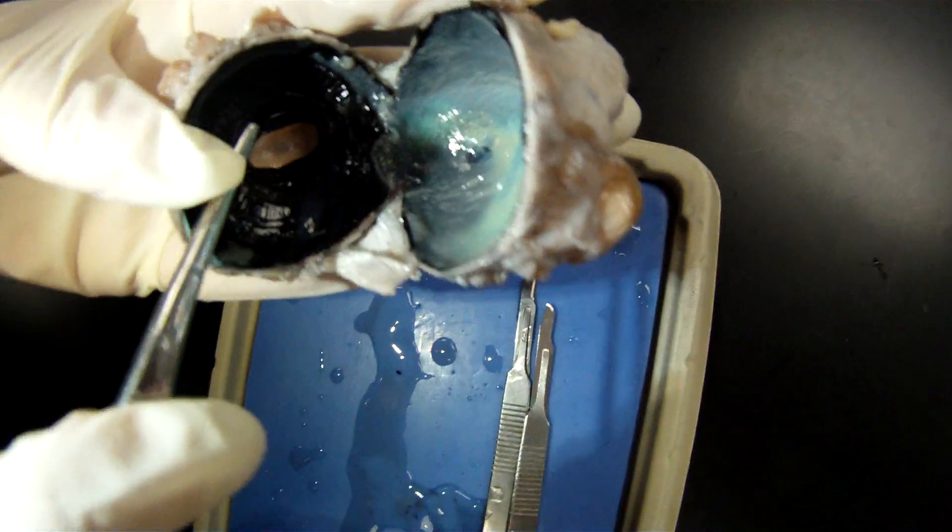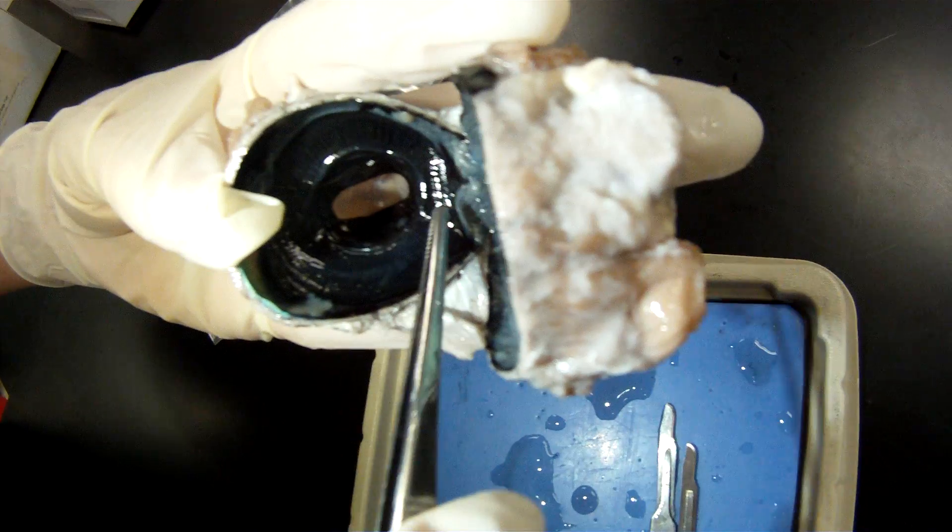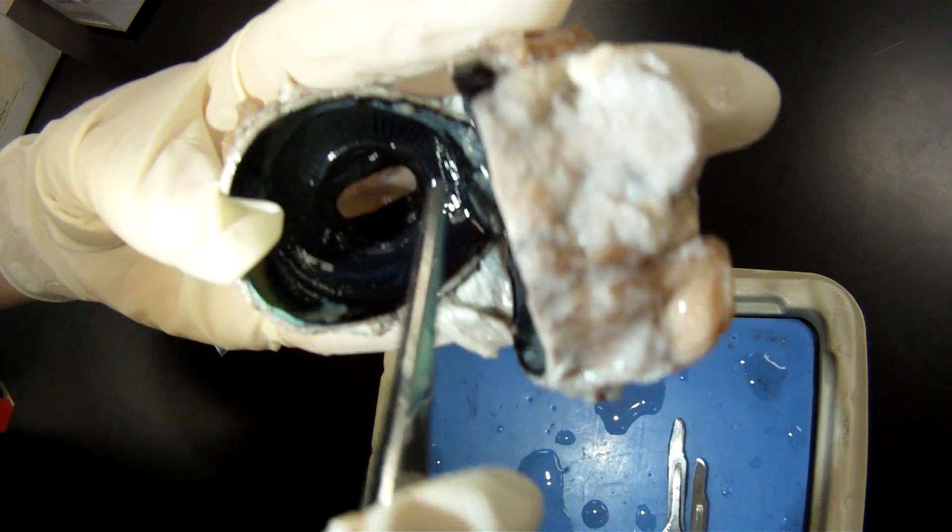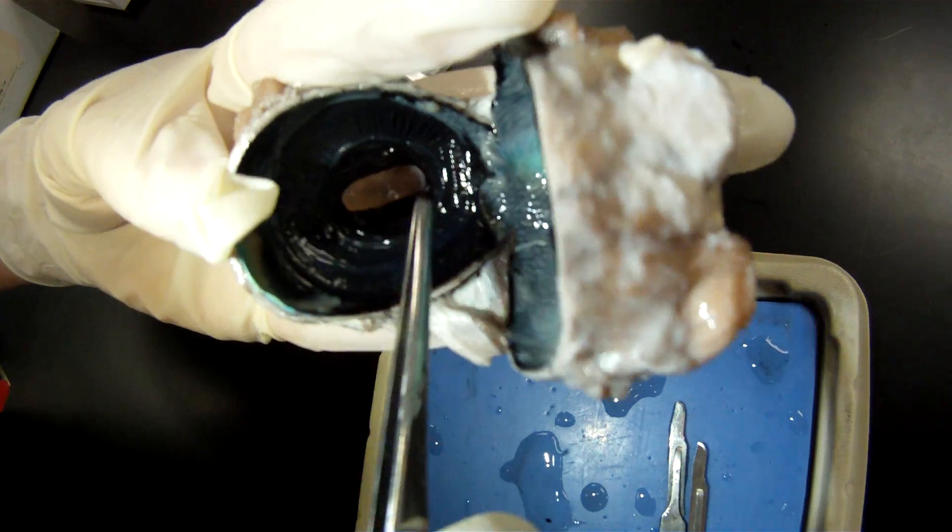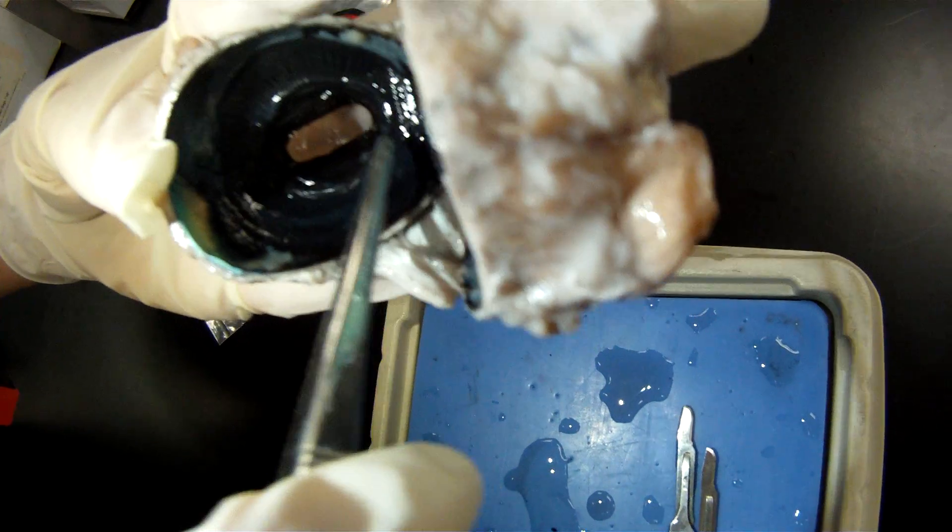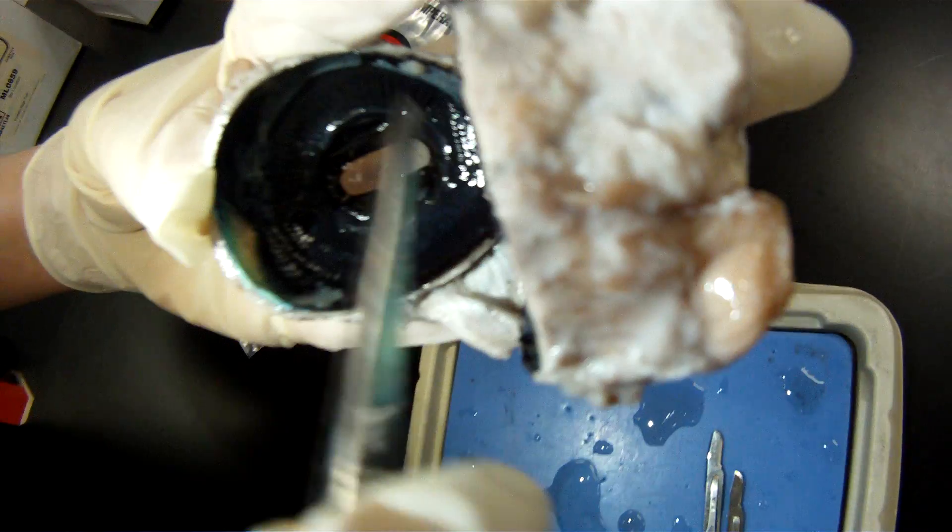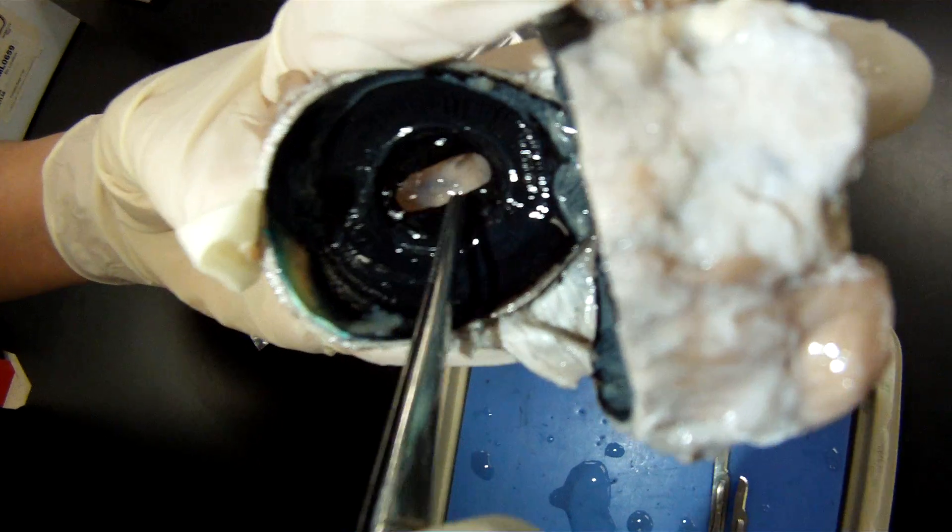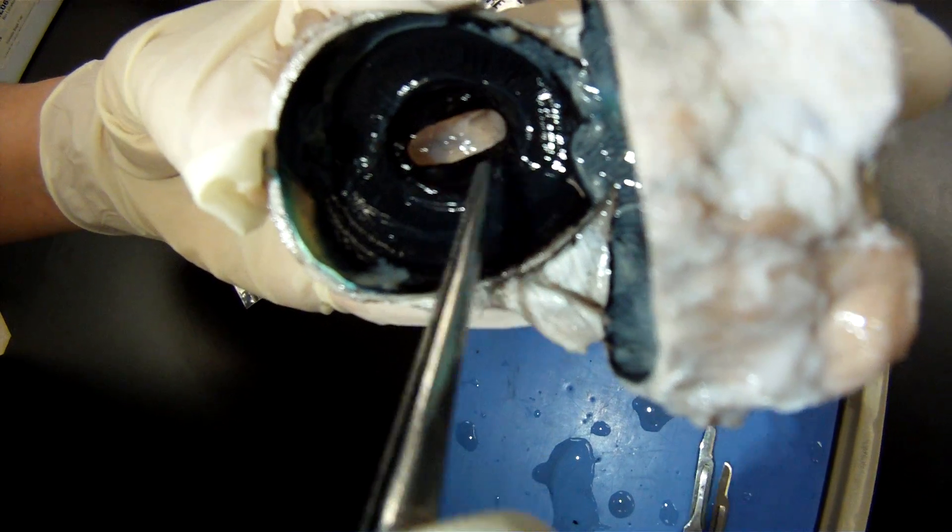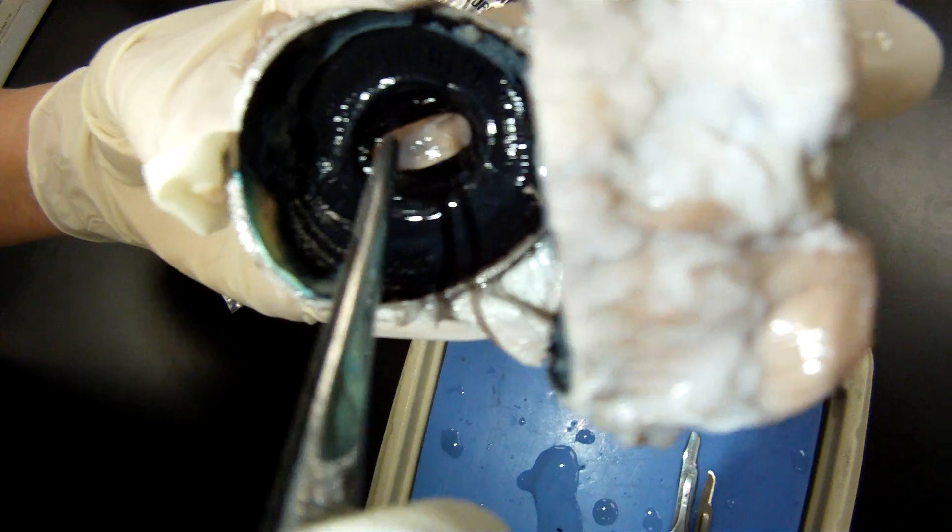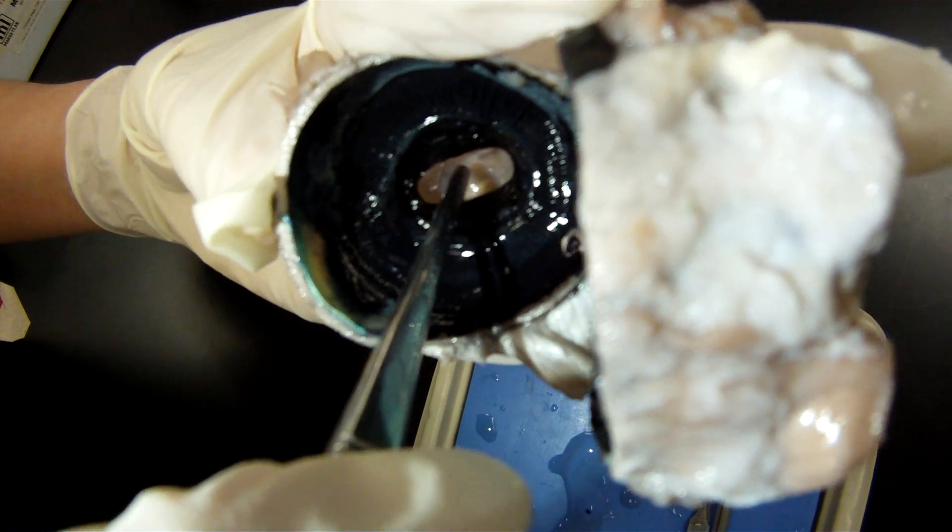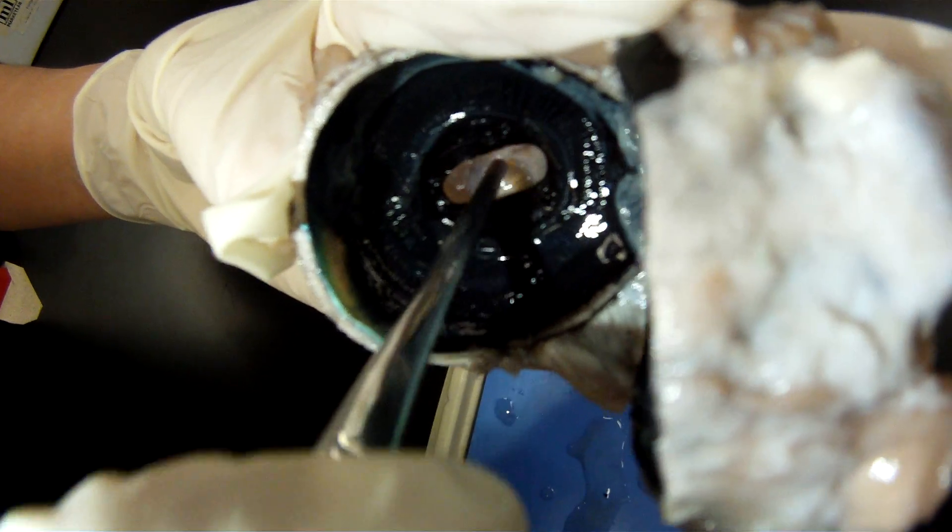We've got the ora serrata, where the retina meets the ciliary body, all the way around. This portion here that is flat and not striated is the iris. This portion is the pupil, and this is the cornea.